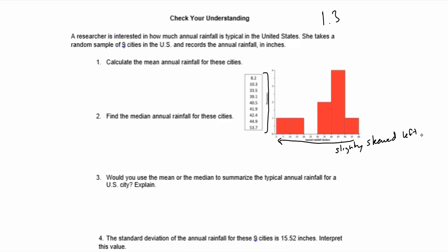We'll keep that in mind when we're trying to figure out if we're going to use mean or median. From here, we're going to calculate the mean annual rainfall for these cities. To find this mean, we're going to take the sum of all those values and divide them by nine because there's nine values.